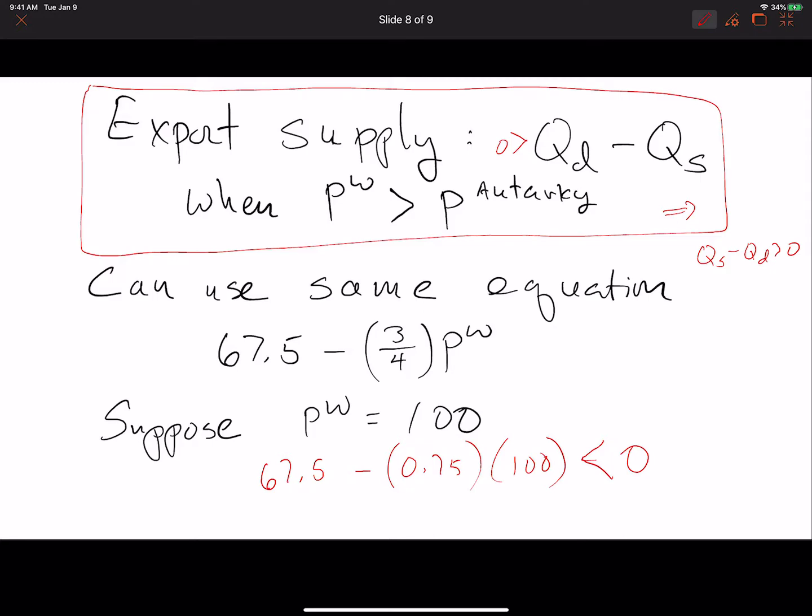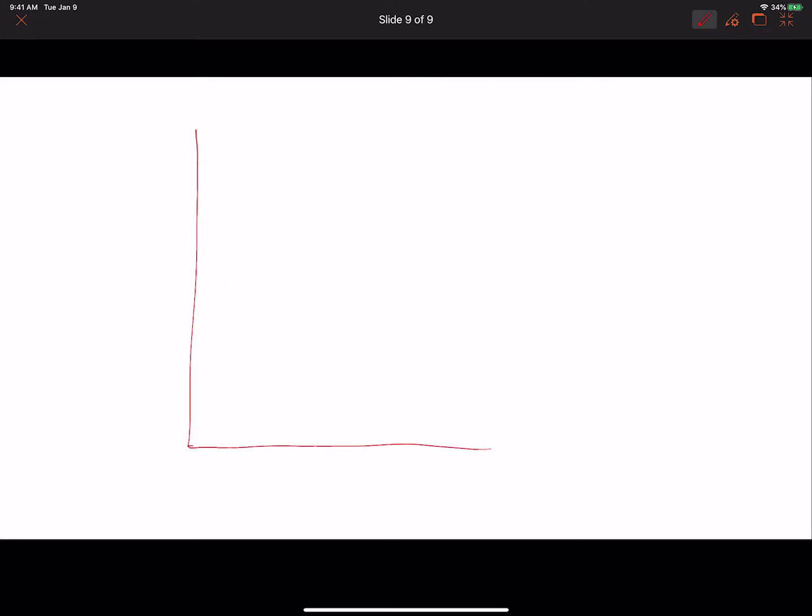If we were to draw this with exports on this axis and the world price over here, we would have an increase in export supply when the price is above the autarky price. I'm going to leave it on your own to see what value of exports are associated with a world price of 100. This is the basic equation version of the export supply and import demand.